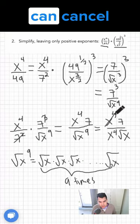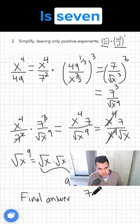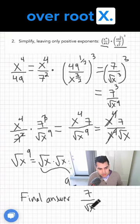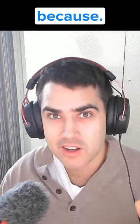And that means we can cancel these out. And this is our final answer. Final answer is 7 over root x. Make sure to follow us and ask your question in the comments.